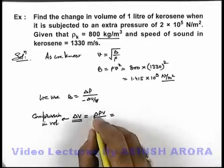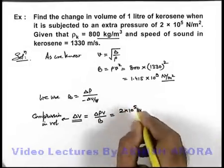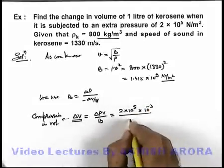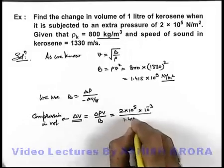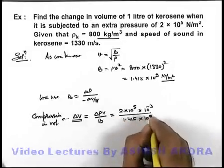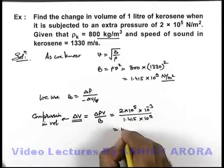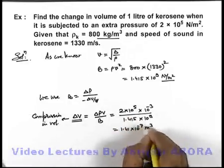So if we substitute the values, for excess pressure it is 2×10⁵, volume of 1 liter is 10⁻³ m³ divided by the bulk modulus we have just calculated as 1.415×10⁹. So on simplifying we'll get 1.41×10⁻⁷ m³.